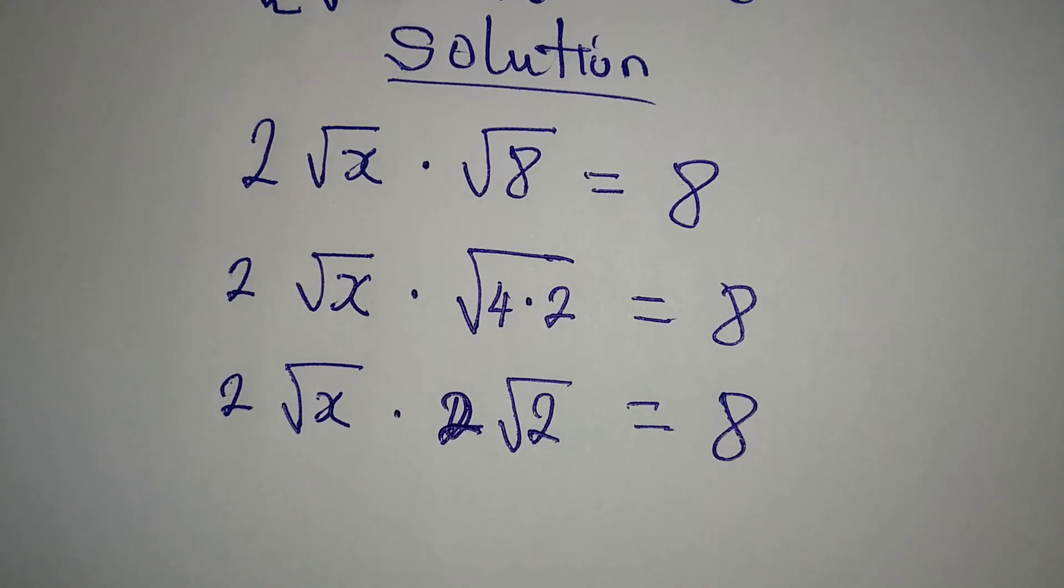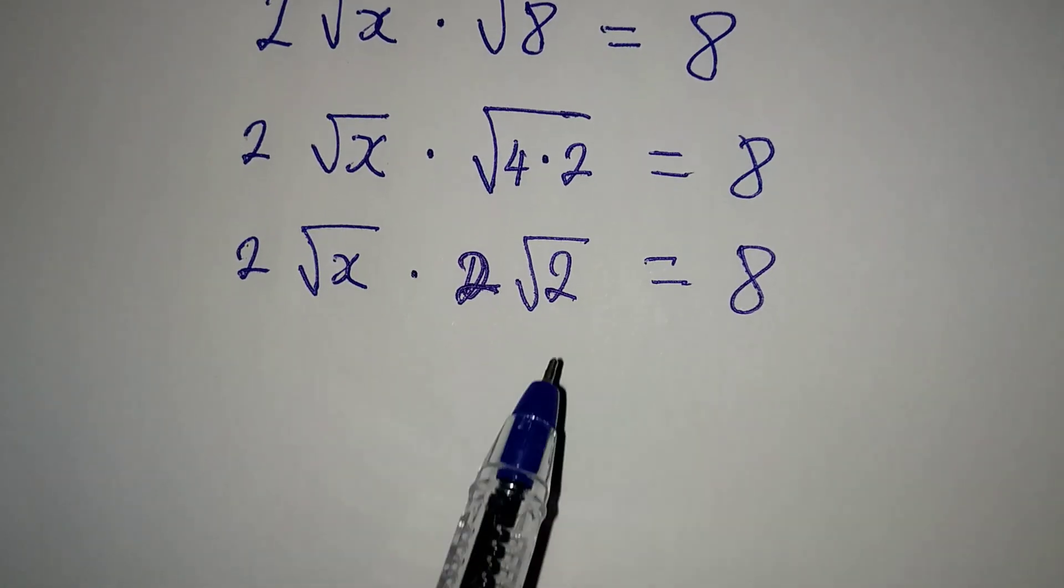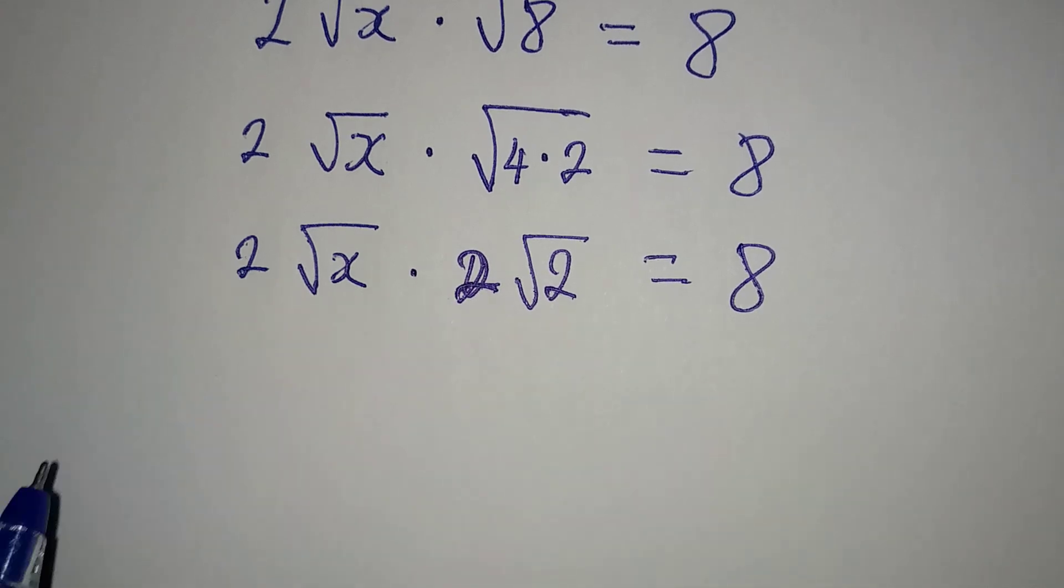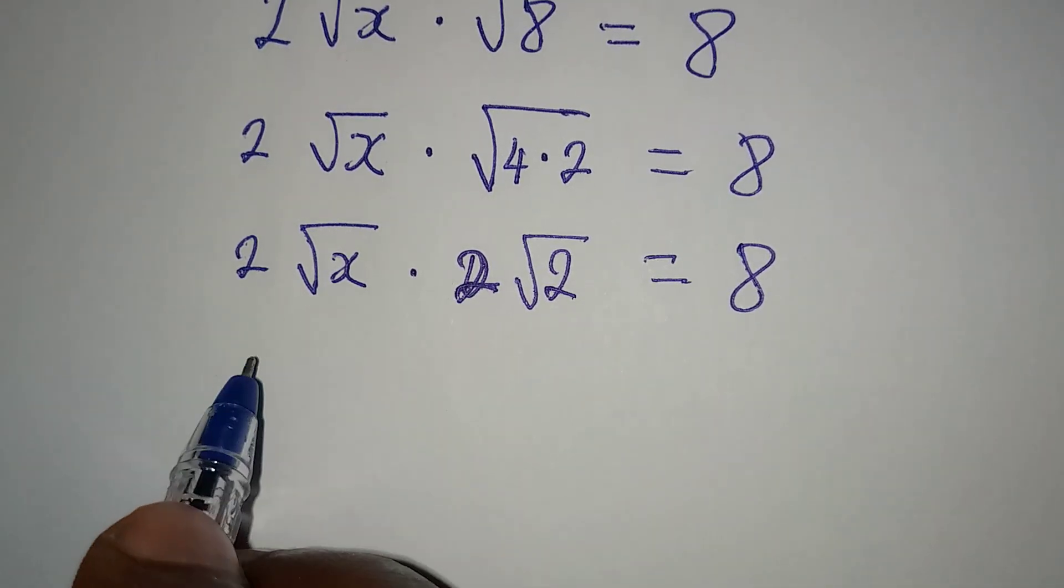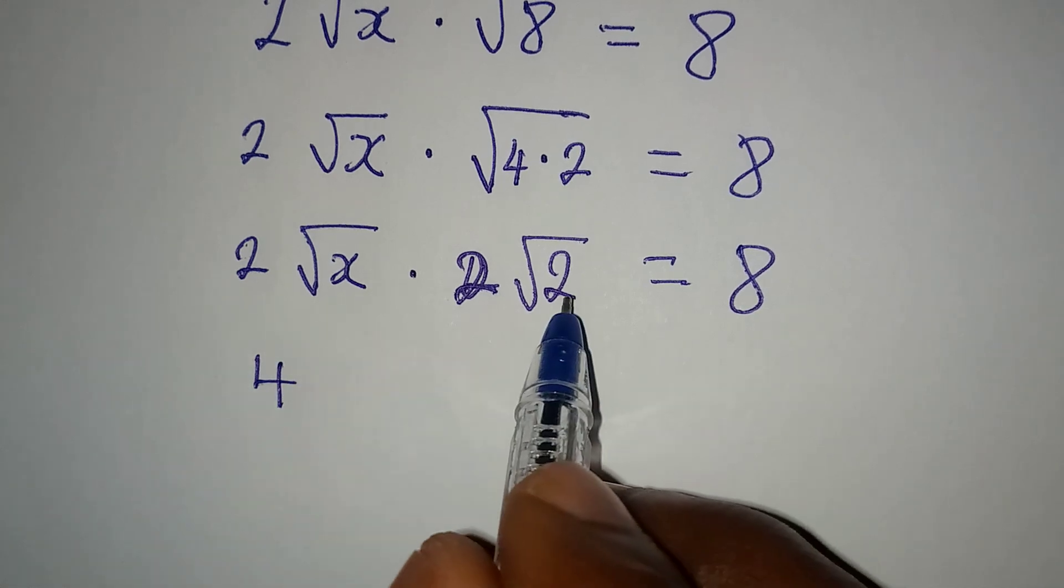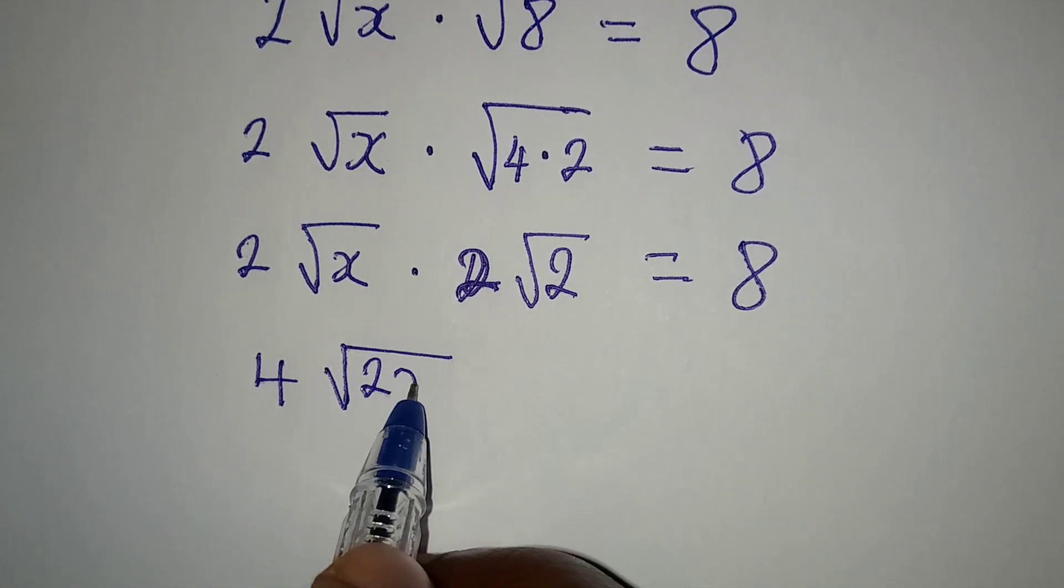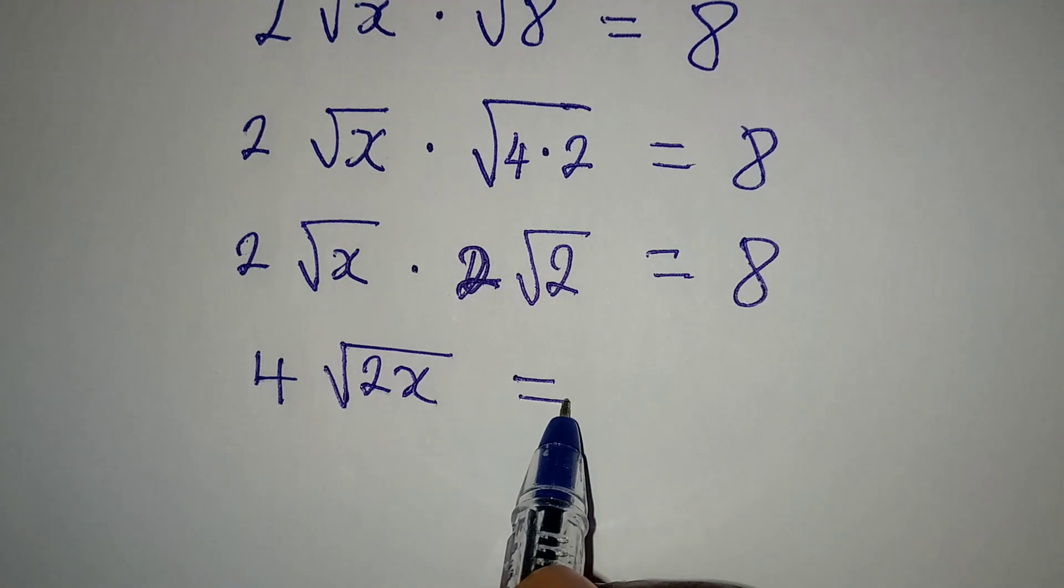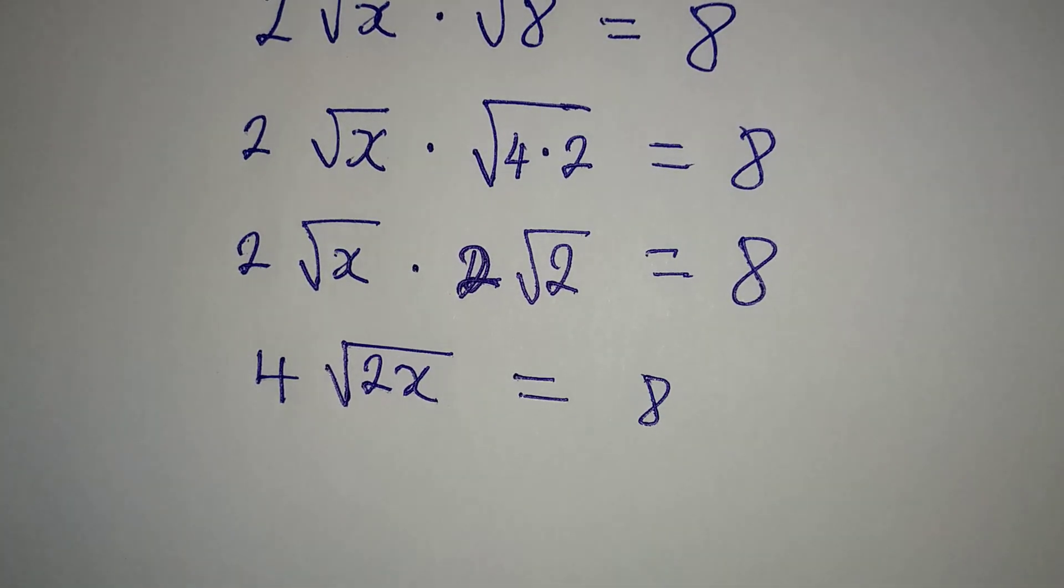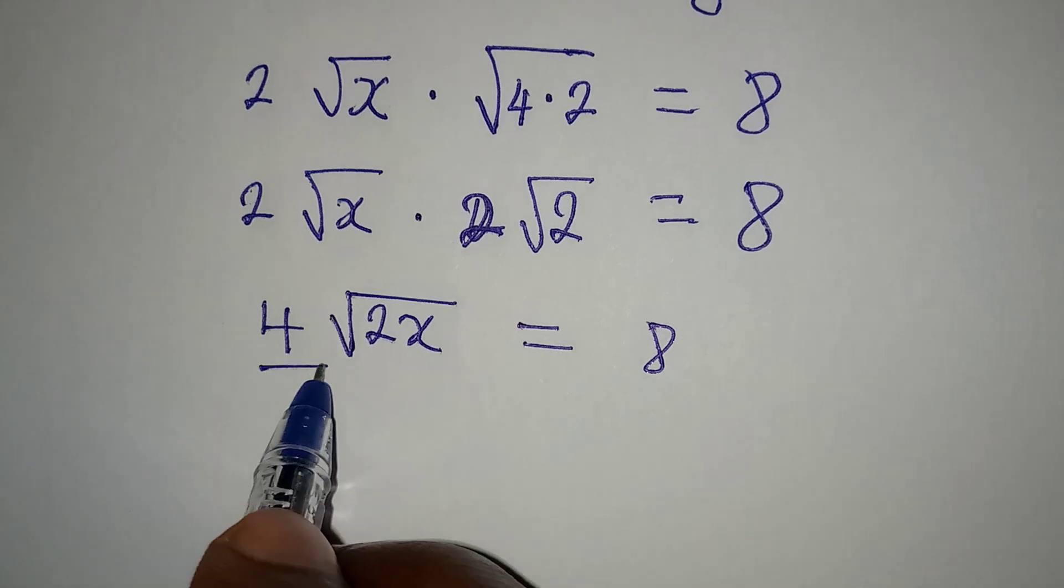Now we can multiply these two together, so 2 times 2 gives 4, then √x times √x will give us √(2x), and this is equal to 8. Now divide this by 4.